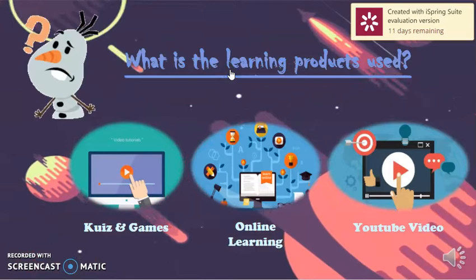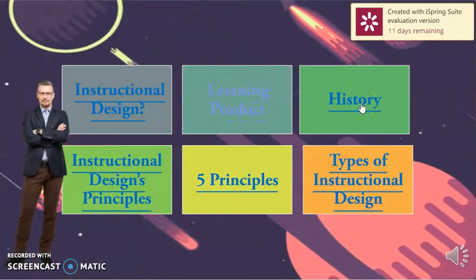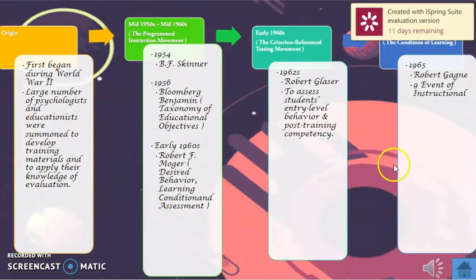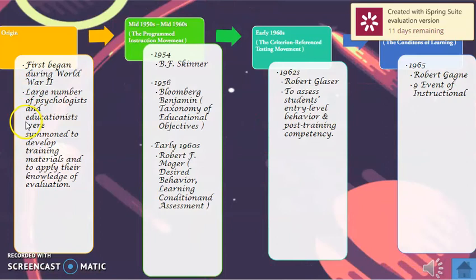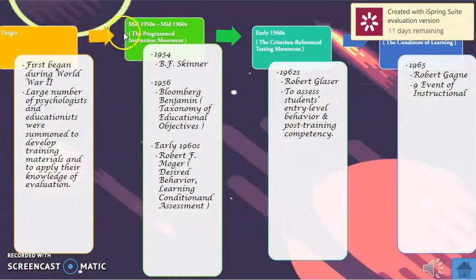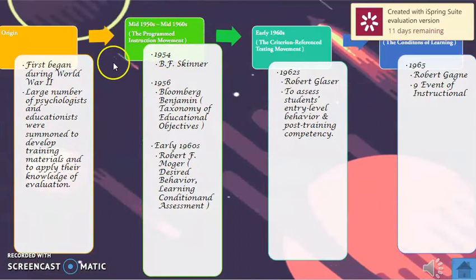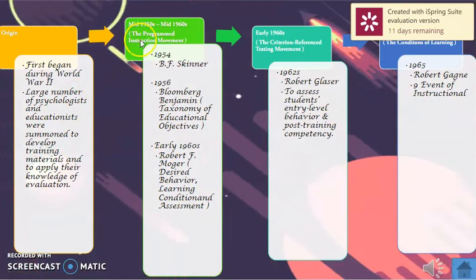The third one is about the history of instructional design. Origin of instructional design began during World War II, when large number of psychologists and educationists were summoned. Next, in the middle, 1950 until 1960, the program and instruction movement was developed.